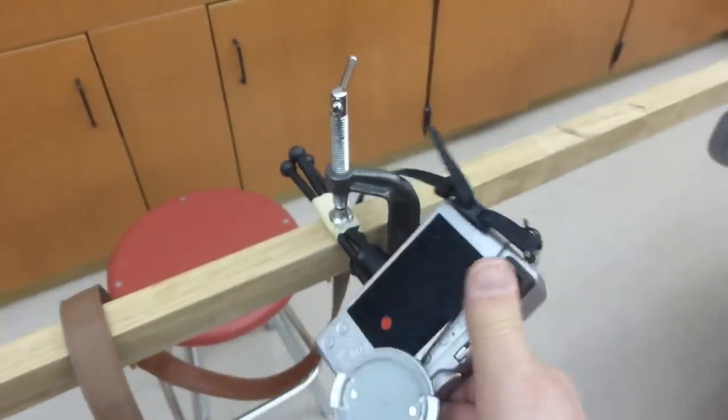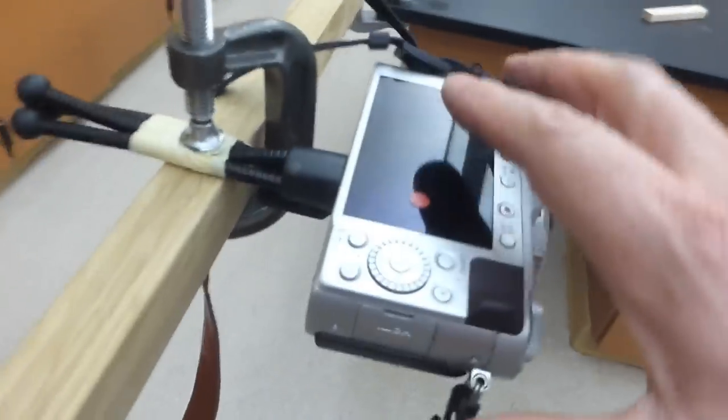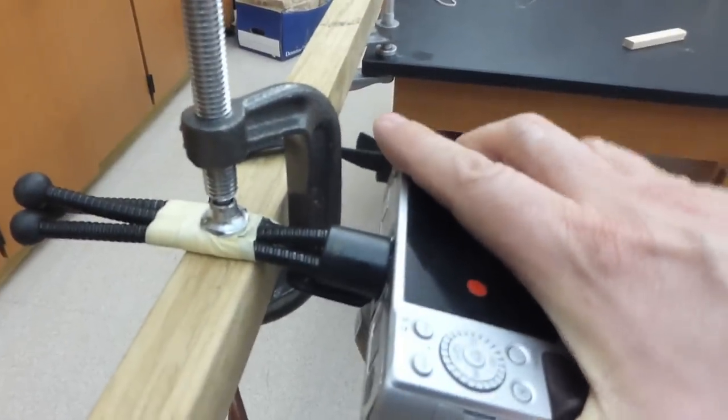Now, let's attach the camera. There we go. There's enough give in the tripod legs that I can adjust the camera to get the pendulum in the center of the picture.